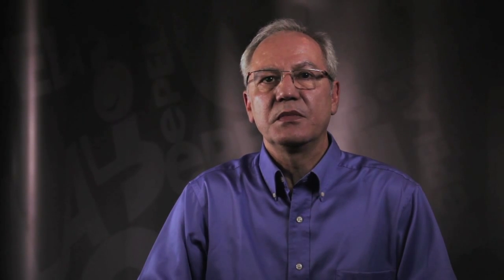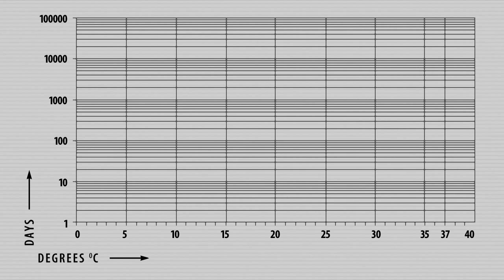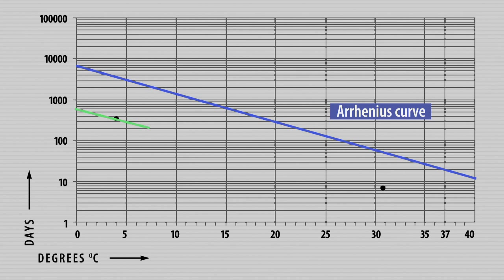If we represent the degradation of a vaccine on a chart with the time in days on the y-axis in the log scale and the temperature on the x-axis, we see that the degradation follows a straight line called the Arrhenius curve. Knowing that all vaccines follow the same pattern, as soon as the coordinates of two points are known, we can design its curve.